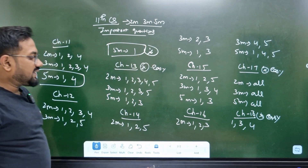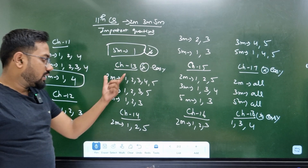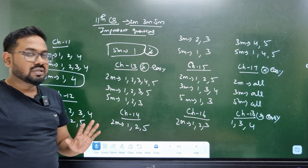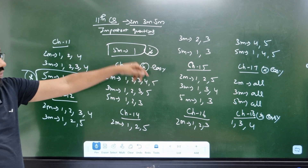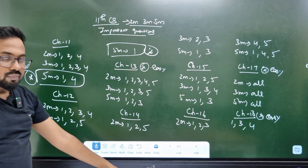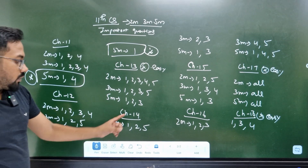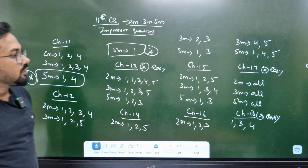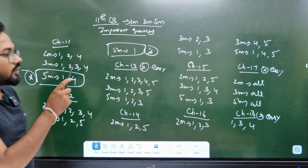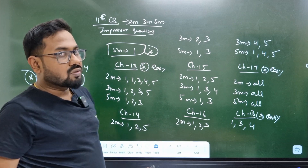Chapter 13 is easy. Chapter 14 — it is easy and important to learn. Chapter 14 — 2 mark is 1, 2, 5; 3 mark is 2, 3; 5 mark is 1, 3. That is 4 questions.